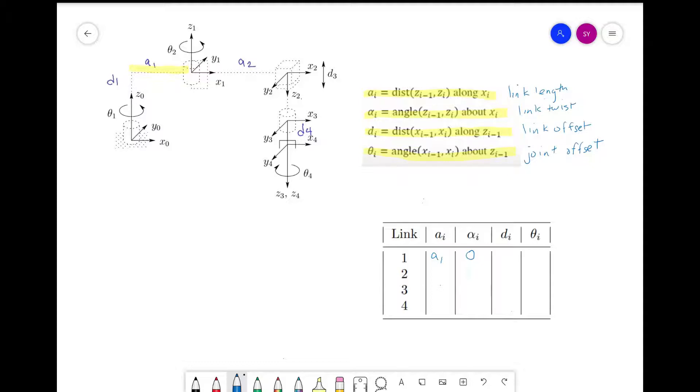For d_i, we see that the distance from x_0 to x_1 along z_0. So we mark d_i as d_1. Just a note that in the textbook, it indicates that this is zero. But the diagram looks like there is a distance, so I'm entering d_1 here.